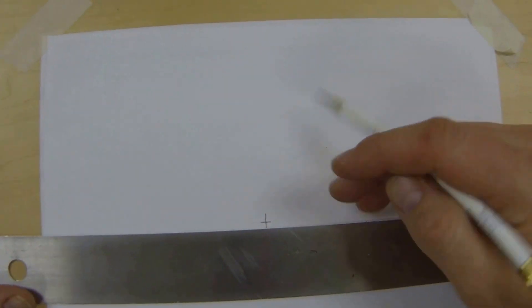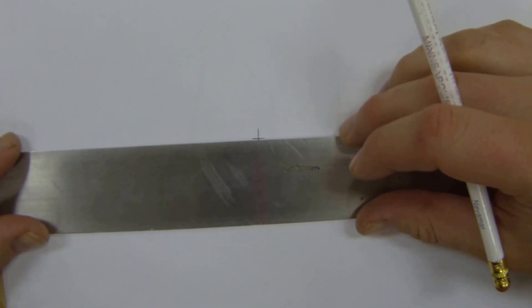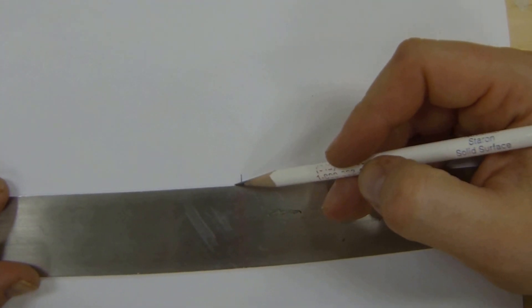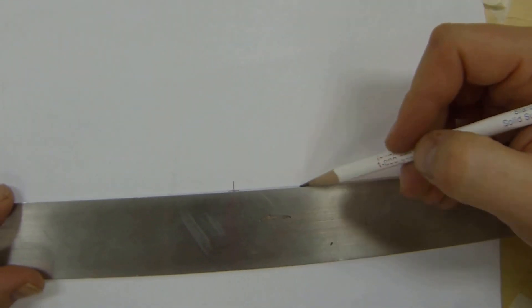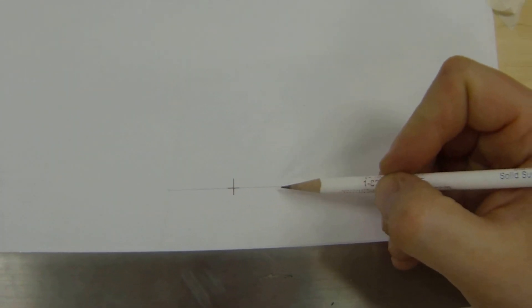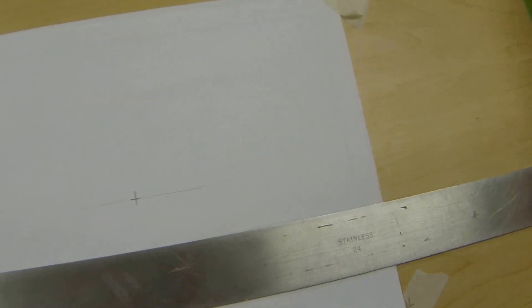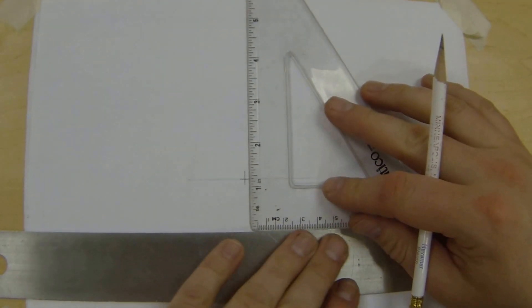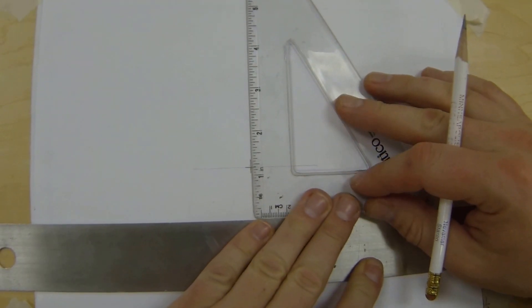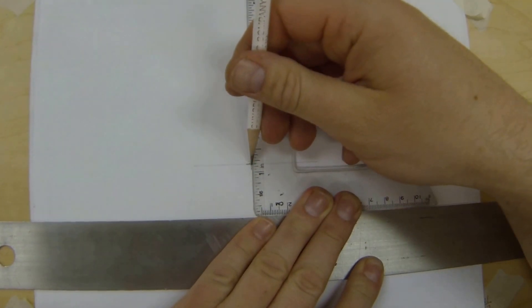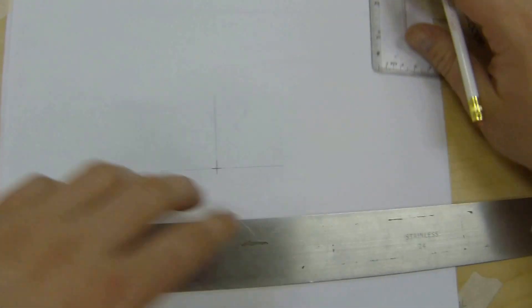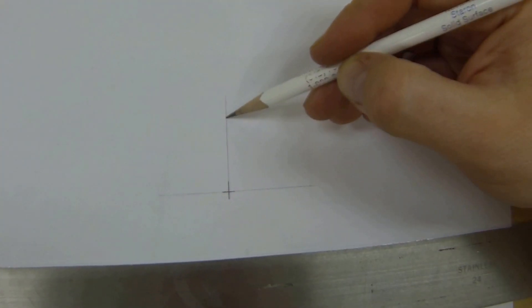The first thing I want to do is take the lines I've already established and extend them out, but I'm going to use a construction line so it's really light. I'm going to grab my triangle and draw a vertical line up here. Now I have my vertical and horizontal established. From there, all I need to do is select the right circle template.